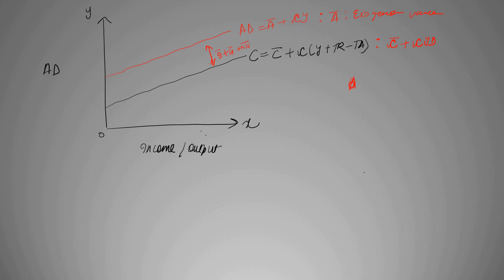Why? Because from our previous AD function, if you remember, we had c plus i plus g plus nx. The i, g, and nx were exogenous constants. The rest of the variables that we kept in 'a' were a part of c, so we don't need to include them. When we have AD and c, then AD minus c equals i plus g plus nx. That is why the difference between these two curves is basically investment plus government spending plus net exports.